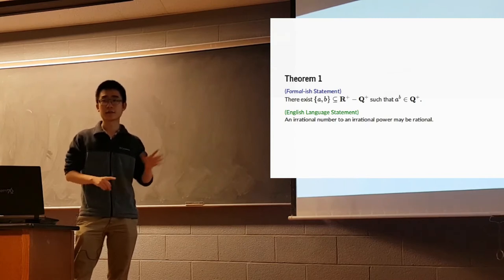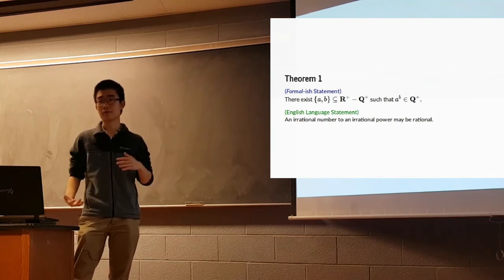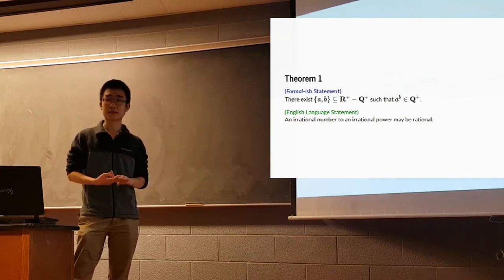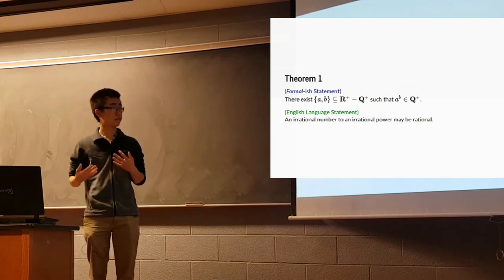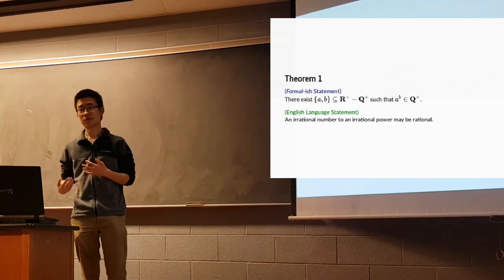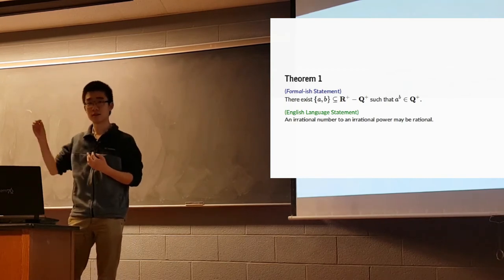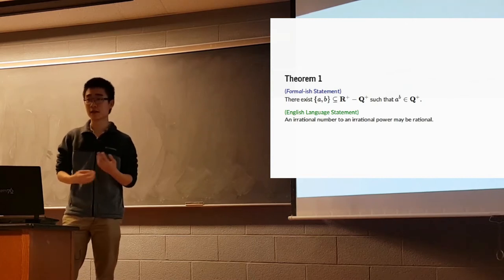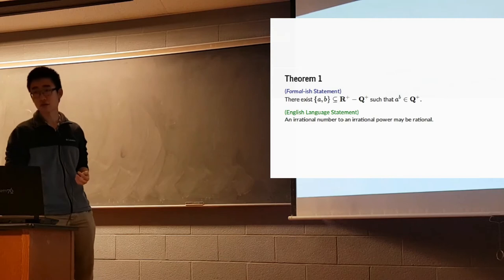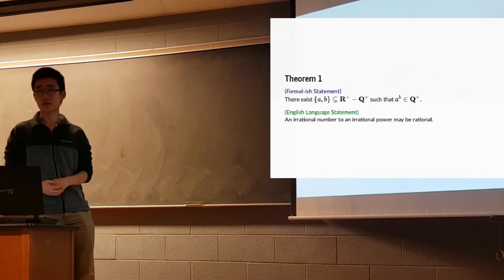What a constructive approach to this problem would be is it would give you an algorithm that lets you construct a and b. You might be curious what kind of proof would not give you an algorithm. Most proofs are themselves lists of steps, and algorithms are lists of steps. What kind of proof might not give you a list of steps? It seems natural that we would want a list of steps whenever possible so that we can turn these math proofs into things that are useful for applications.